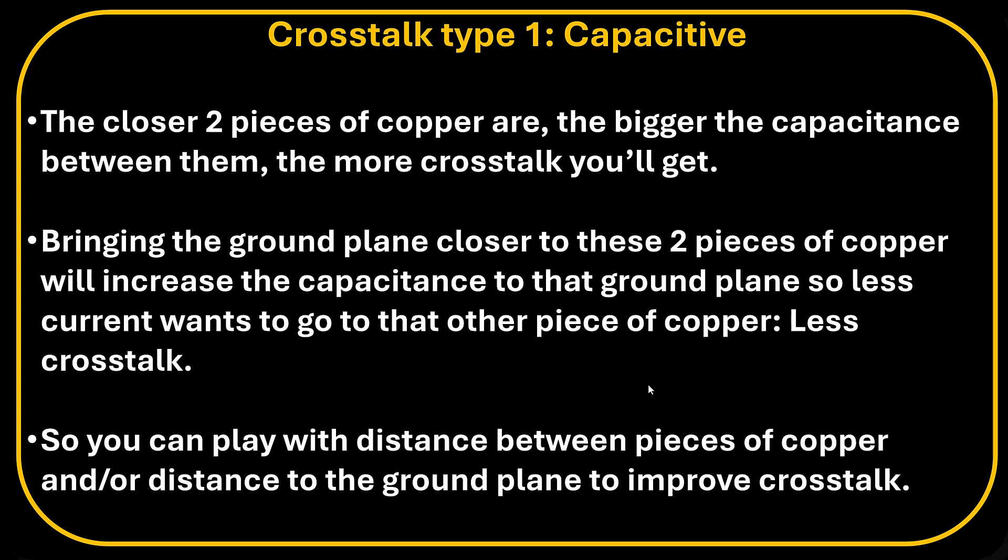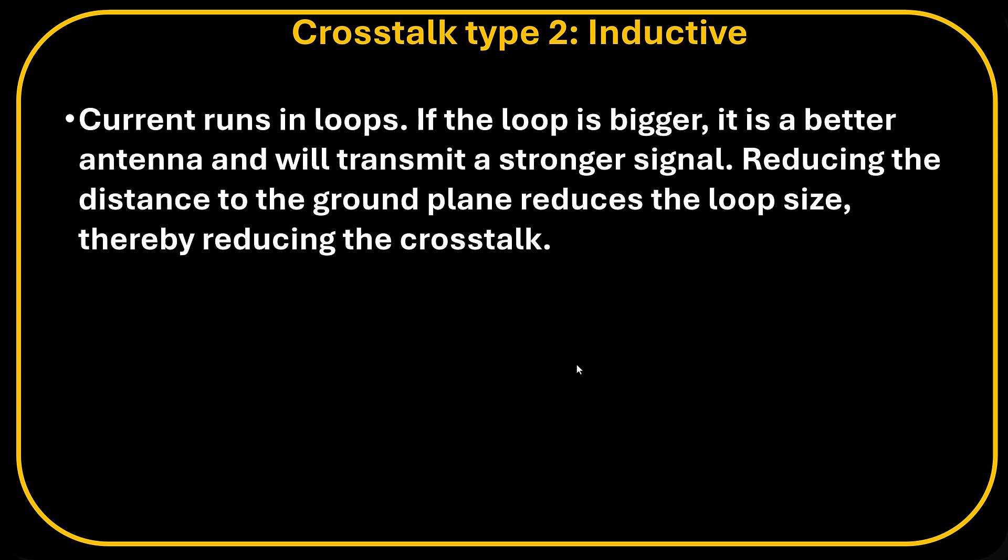Let's look at the second type of crosstalk, inductive crosstalk. This is caused by current loops. Now, if the loop is bigger, it's a better antenna and will transmit a stronger signal. Reducing the distance to the ground plane reduces the loop size, thereby reducing the crosstalk.